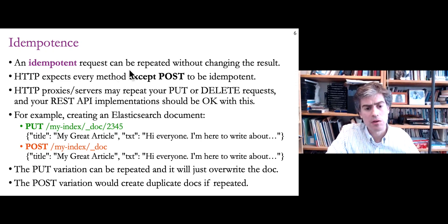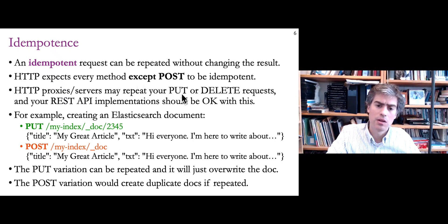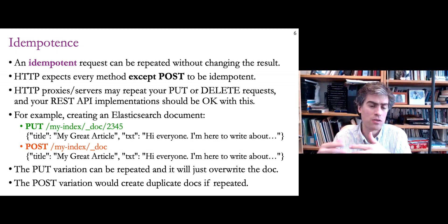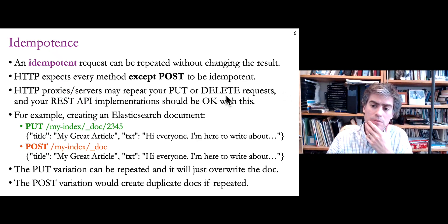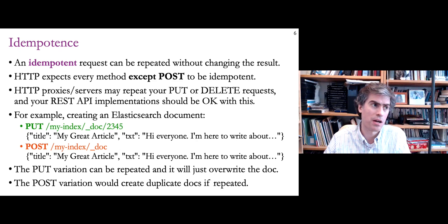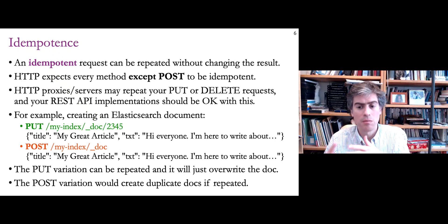HTTP expects every request that uses a method other than POST to be idempotent. That means if there's a proxy, it can repeat your request, and that shouldn't have any effect on the system. Running a GET request once or twice or three times shouldn't change the state of the system. Similarly, running a PUT or DELETE request multiple times should not alter the system state. HTTP built this rule in because it makes scalable distributed systems easier to build — you don't have to guarantee a request only executes once.